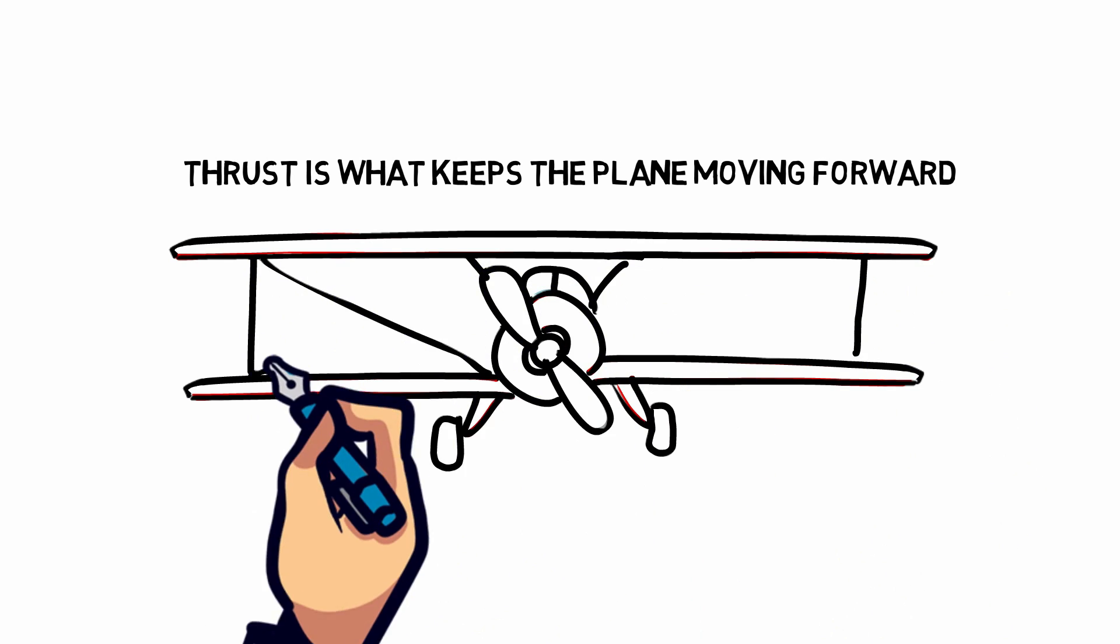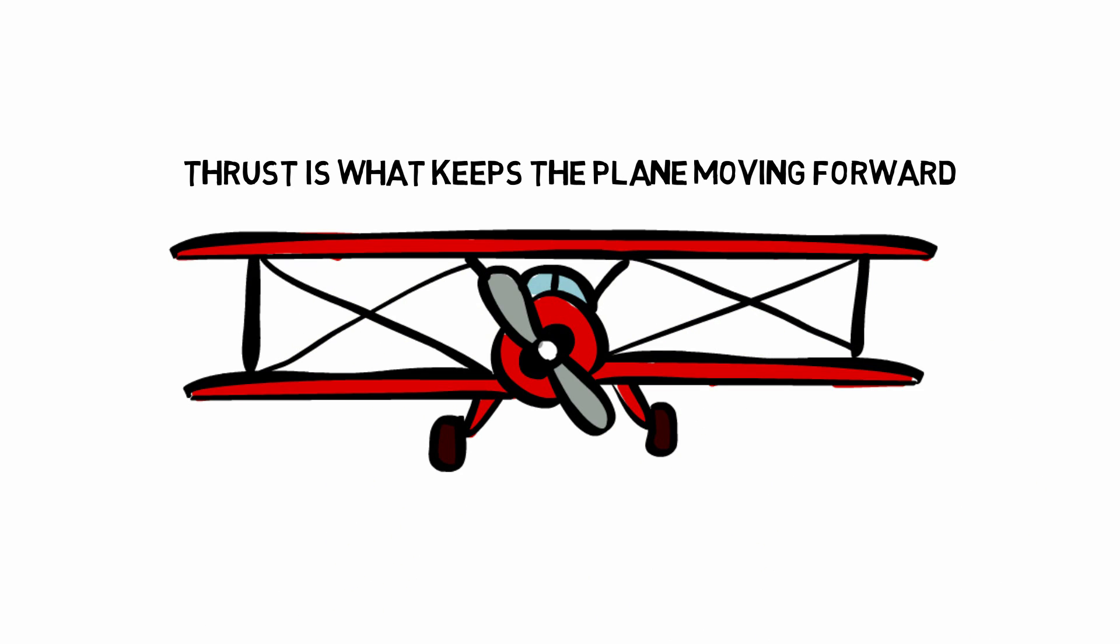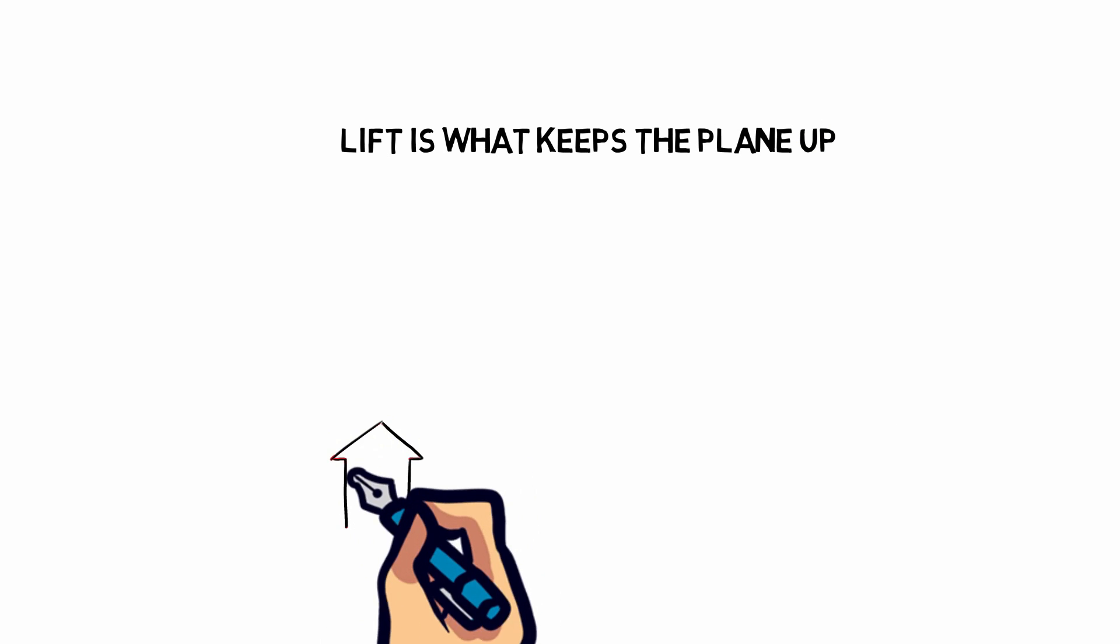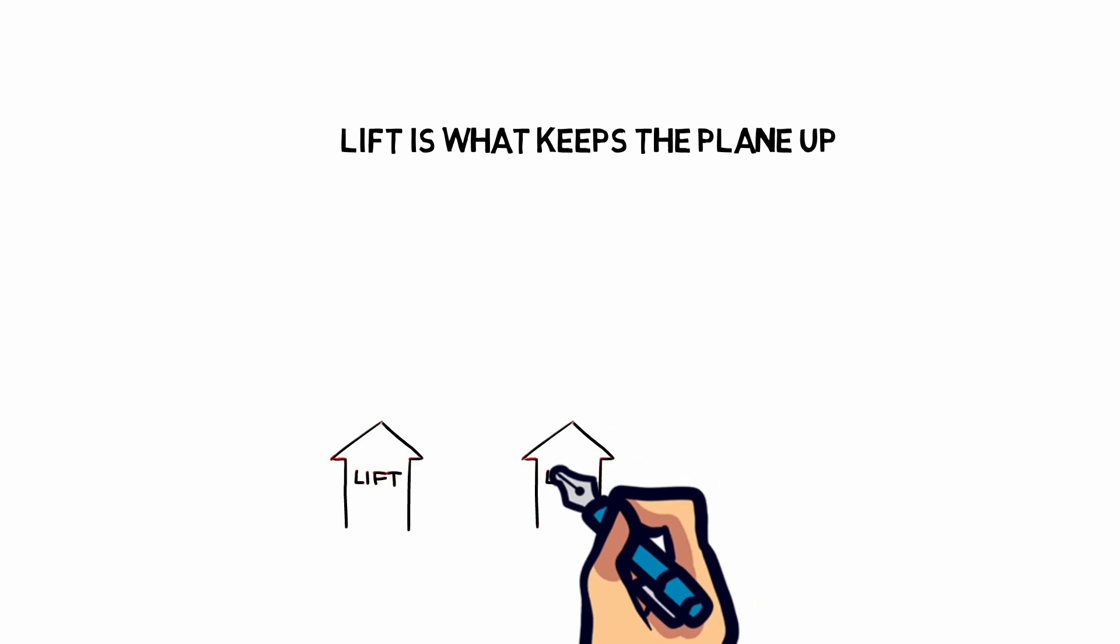Lift is what keeps the plane up and is one of the reasons why a plane has wings shaped the way they are. Many plane wings are curved at the top and smoother at the bottom.